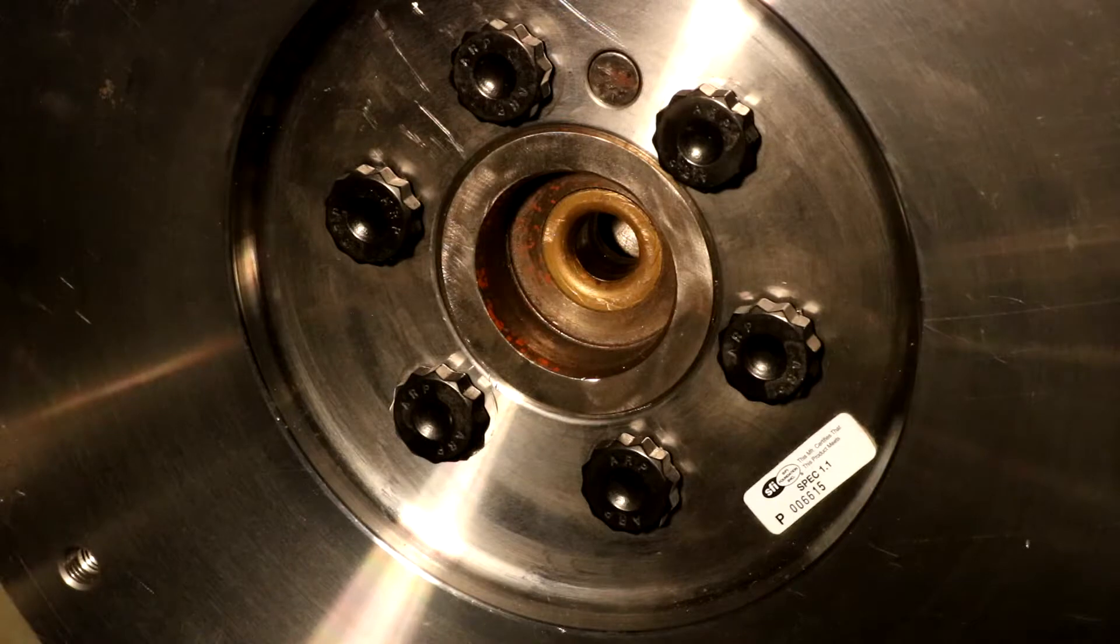Hey guys, welcome back to the channel. Now that we have the dash in, I can get back to the transmission. So today's project is going to be to get the clutch, the bell housing, the release bearing, the transmission itself, and the cross member. So quite a bit of work, let's get started.